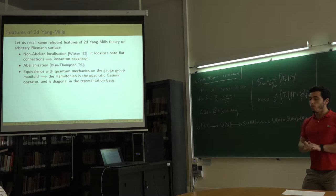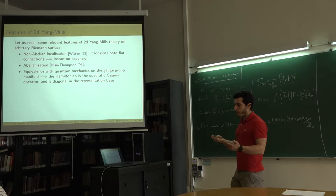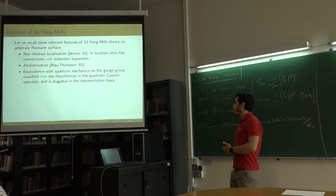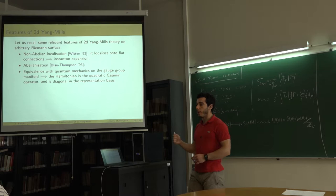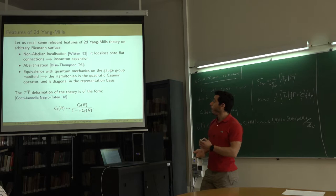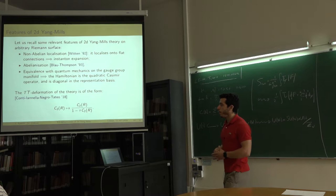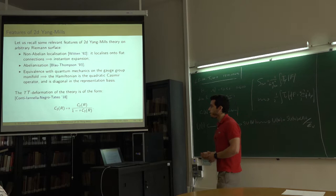The theory is also equivalent to quantum mechanics on the gauge group manifold, where the Hamiltonian is the Casimir operator — diagonal in the representation basis, as developed by Douglas and extended in reviews by Cordes, Moore, and Ramgoolam (1993–94). We now arrive at the TT-bar deformed formula: since the Hamiltonian is the Casimir, we apply the known Hamiltonian transformation rule for the TT-bar deformation.